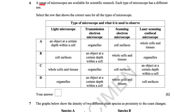A question gives a range of different microscopes and asks you to select the row showing correct uses for all types. With a light microscope you do not look at organelles, so discard option D. A transmission electron microscope is used for looking at organelles. A scanning electron microscope is used for looking at cell surfaces, as it detects electrons reflected from the surface. A laser scanning confocal microscope is used to look at an object at a certain depth within the cell. This gives answer C.